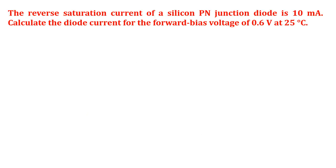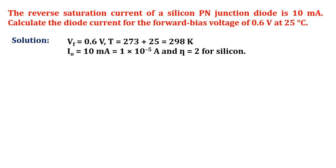Calculate the diode current for the forward bias voltage of 0.6 volts at 25 degrees Celsius. The solution is: forward voltage Vf equals 0.6 V, the temperature is given in degree Celsius.